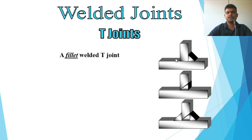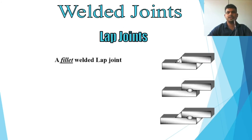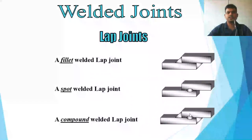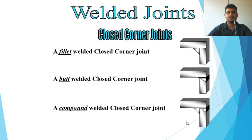T-joints include the fillet weld T-joint, butt weld T-joint, and compound welded T-joint — fillet plus butt combined. Lap joint types include the fillet weld lap joint, butt weld lap joint, and compound weld lap joint (spot and fillet combined). For corner joints, the closed corner can be a fillet weld, butt weld, or compound weld closed corner joint.